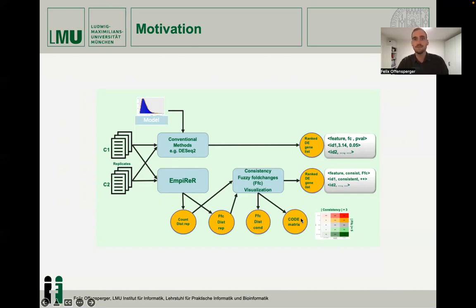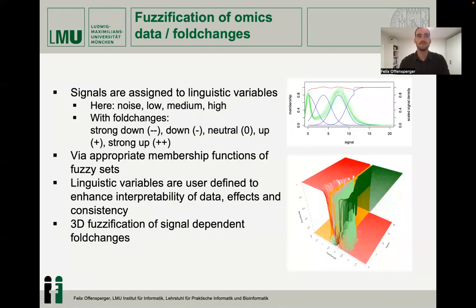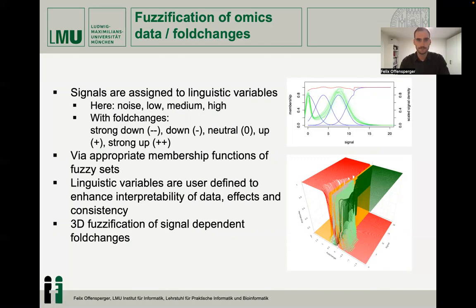The calculation is fully transparent and insights can be viewed in appropriate visualizations. Empire R employs a FASI value-based representation of the count data, assigning the signals into linguistic variables via appropriate membership functions of FASI sets — for example, into noise, low, medium, and high. These linguistic variables are user-defined to enhance interpretability of data, effect, and consistency.